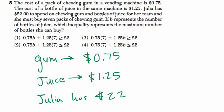And she can spend them on chewing gum and juice for her team and she must buy seven packs of chewing gum. If B represents the number of bottles of juice, so I'll put a B here. Which inequality represents the maximum number of bottles she can buy?